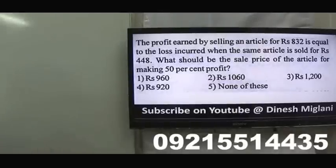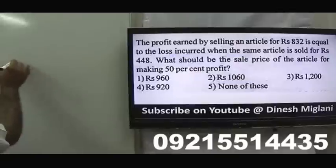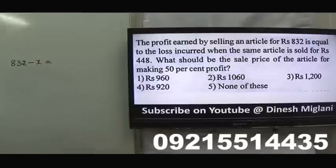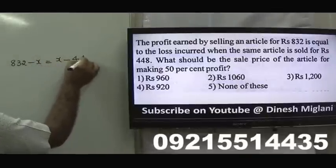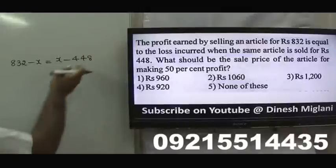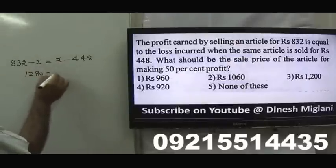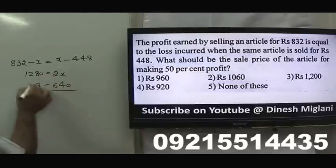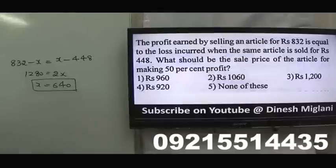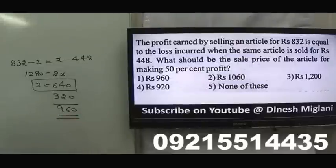Profit earned by selling an article for ₹8.32 equals the loss when the same article is sold for ₹4.48. Find the sale price for a 50% profit. Let cost = x. Then 8.32 − x = x − 4.48, so 2x = 12.80, x = 6.40. Cost = ₹6.40. Selling price for 50% profit = 6.40 × 1.5 = ₹9.60. Answer: ₹9.60.